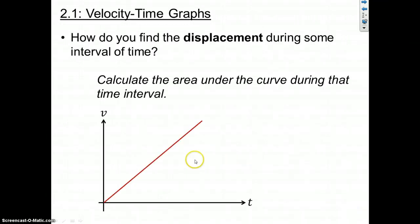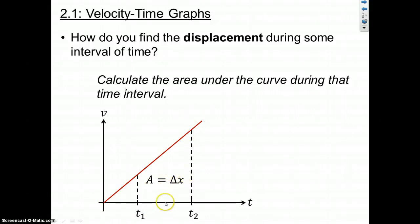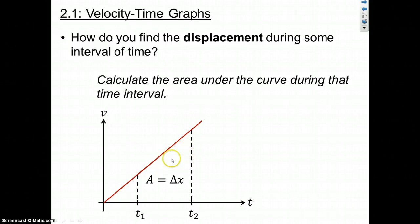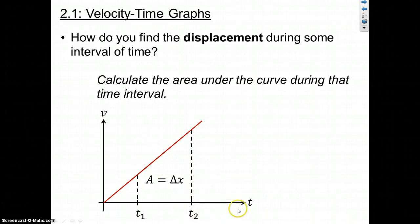The great thing about VT graphs is that the area under the curve has a special meaning. Let's say we have some time interval from T1 to T2 and here's our VT curve. If you find this area, you have found the displacement during that particular time period. With tick marks on both axes, you can find the area of the triangle using one-half base times height, add the area of the rectangle using height times base, and that total equals your displacement. Displacement is positive if the area is above the x-axis, and negative if the area is below.